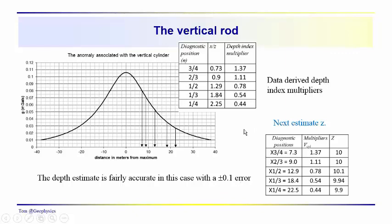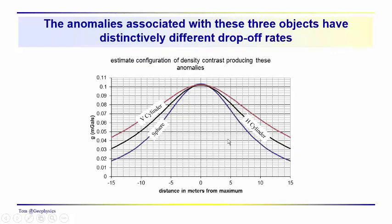So this analysis follows the same pattern, the same approach that we've used to evaluate the anomalies associated with a sphere, a horizontal cylinder, and now we have the vertical cylinder.